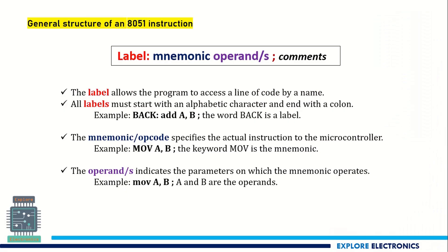Before going to the addressing modes, let us see what is the general structure of an AT51 instruction. Any AT51 instruction — if we say MOV A, B — will be an instruction. This instruction will have an opcode followed by operands, and a semicolon indicating the end of the instruction. Before the opcode, we can have a label for indication of that line, and after the semicolon we can have a comment.